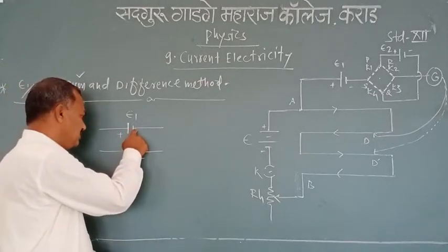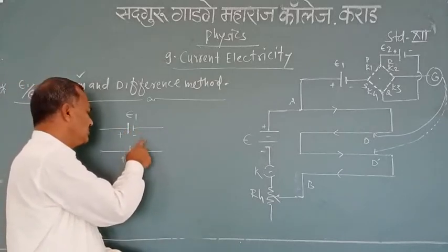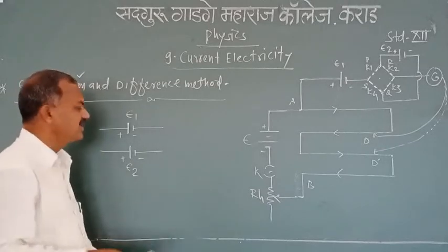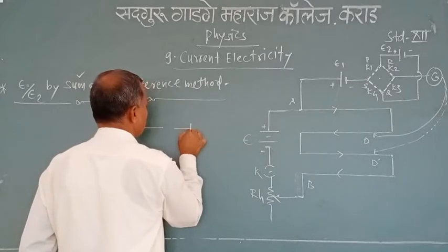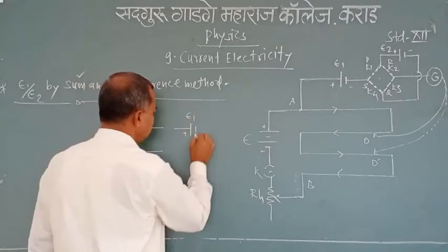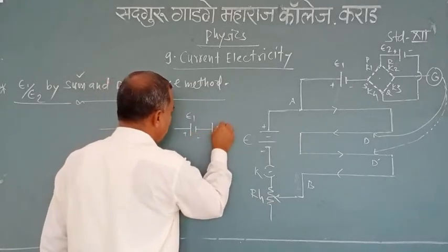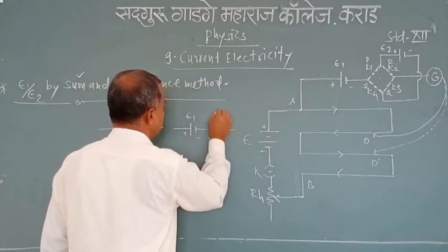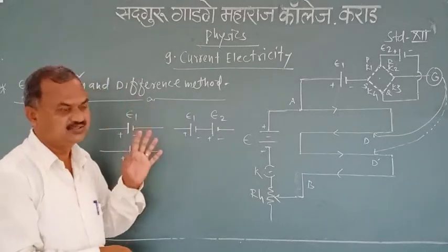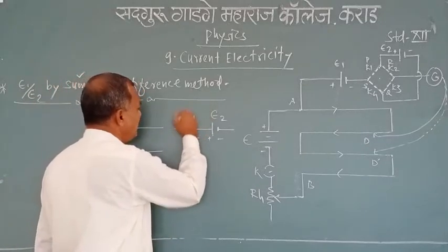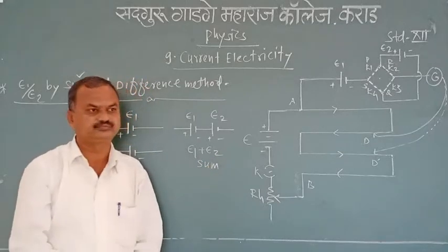When the negative terminal of the first cell is connected with the positive terminal of the second cell, or the positive terminal of the first is connected with the negative of the second, the cells are said to be connected in series or 'sum' (assist) method. In this combination, the combined EMF equals E1 plus E2.